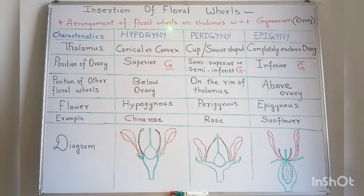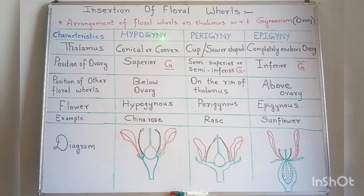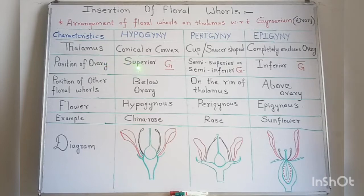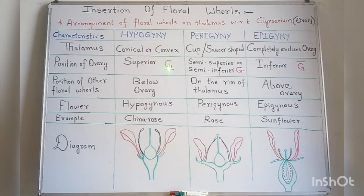There are three types: hypogyny, perigyny, and epigyny. First, we'll see hypogyny. The word 'hypo' means below and 'gyny' means gynoecium, that is the ovary. In hypogyny, the shape of the thalamus is conical or convex, and on this thalamus the ovary occupies the superior or the highest position. This is the diagram of hypogyny — the ovary is occupying the superior, that is, the highest position.